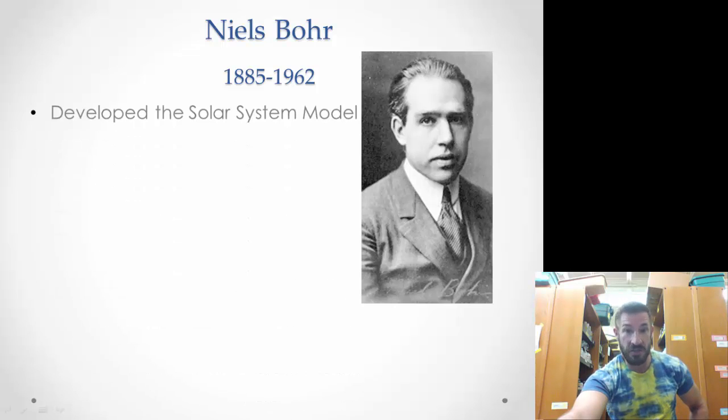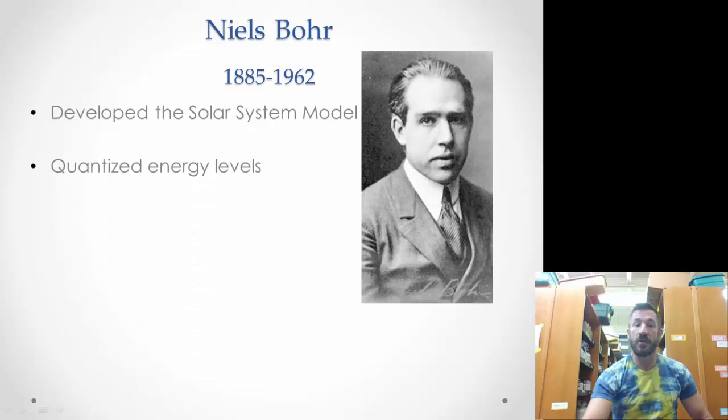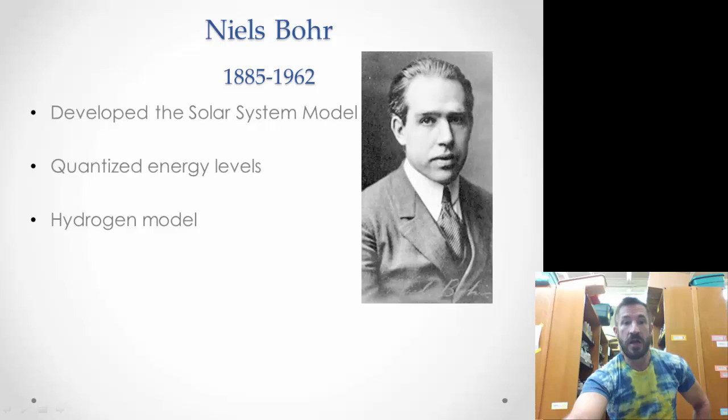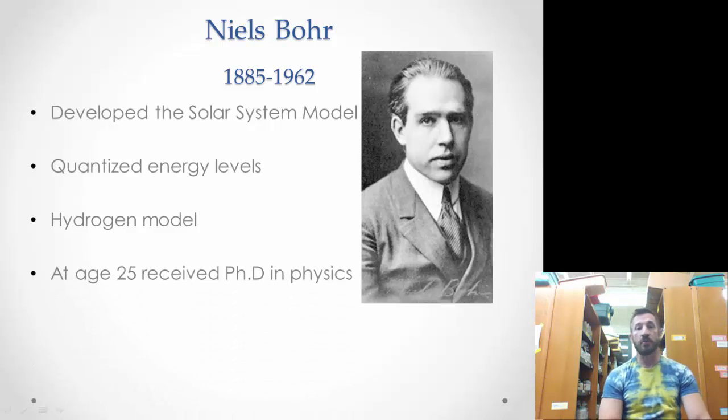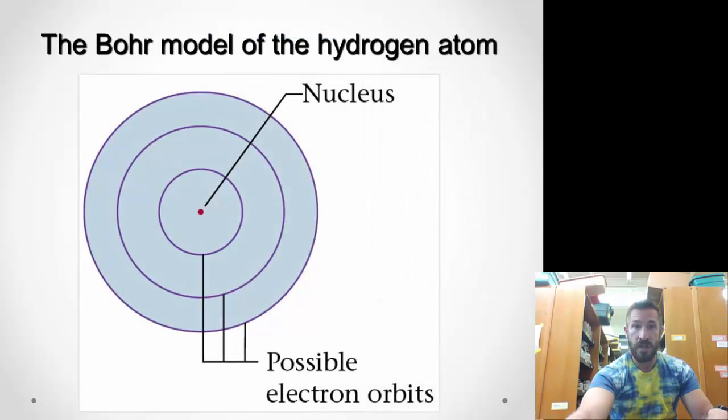Nils Bohr was the person who was credited with this. He developed this solar system model of the planets and had what we call quantitized energy levels, also called the hydrogen model. At age 25, he received a Ph.D. in physics, which is a very young age to receive a Ph.D.